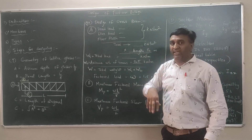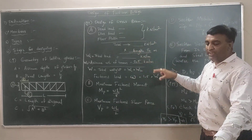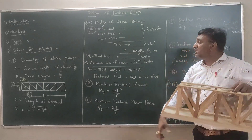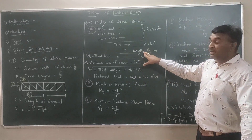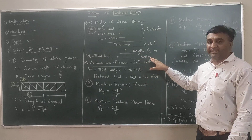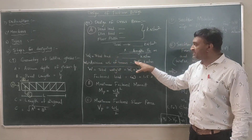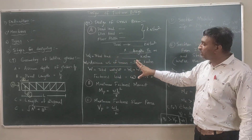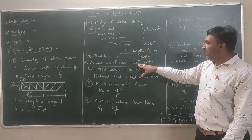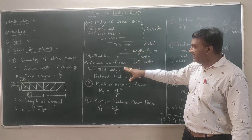When you multiply the slab thickness by the density, you get a value in kN/m². To convert to UDL (kN/m), multiply by the tributary width — for example, if the spacing is 3 m, multiply by 3. For the beam self-weight, we assume 0.5 to 1 kN/m; typically 0.5 kN/m is taken.